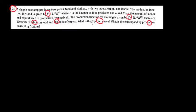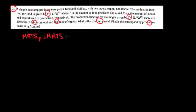Let's start working on the contract curve. The contract curve shows the relationship between capital and labor in the economy when companies operate optimally in the market and exchange capital for labor until they cannot do any better. So we want the marginal rate of technical substitution for the food companies to equal the marginal rate of technical substitution for the clothing companies.